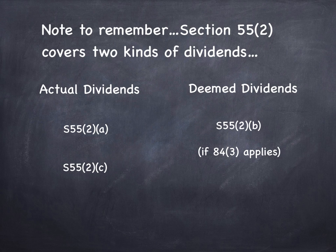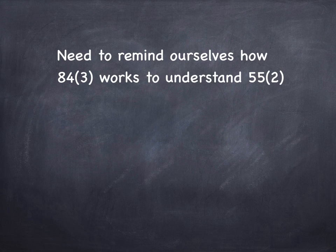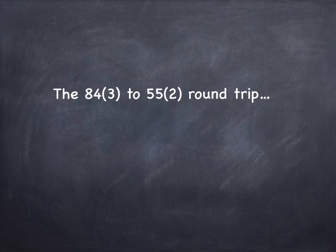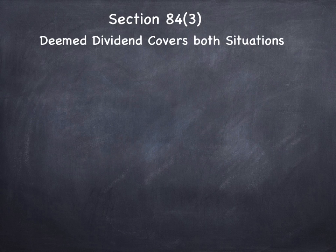Deemed dividends occur in 84.3 type transactions. Now, you might not remember how 84.3 works, so let's go through a little reminder. Both 84.3 and 55.2 are anti-avoidance rules, and they have an interesting interplay — in my nerdy tax mind they do. In fact, they call it the 84.3 to 55.2 round trip. Section 84.3 — now we're not talking about 55.2 anymore, we're talking about 84.3. Deemed dividends covered in 84.3 cover two situations.